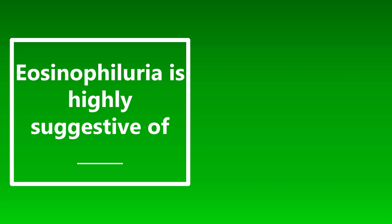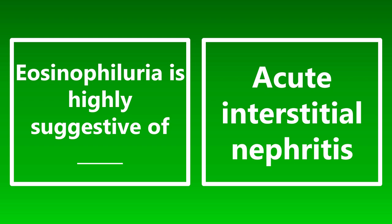Eosinophiluria is highly suggestive of what? This can be seen in multiple conditions, but the big one is acute interstitial nephritis. If you're seeing eosinophils in the urine, think acute interstitial nephritis. It can also be seen in urinary tract infections and eosinophilic granulomatosis with polyangiitis, but the most relevant one for emergency medicine is acute interstitial nephritis.